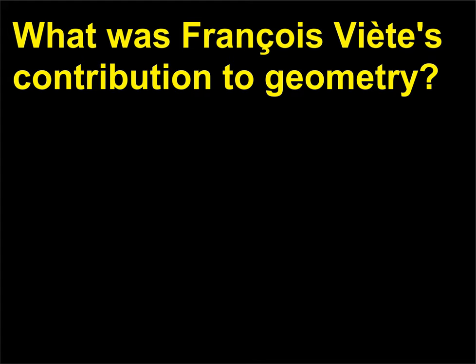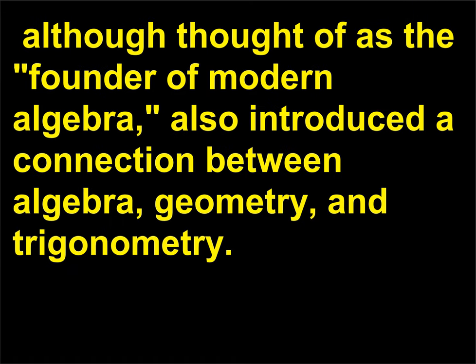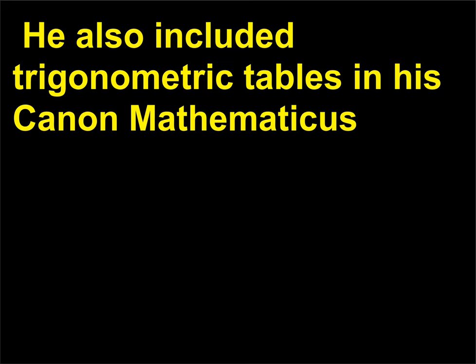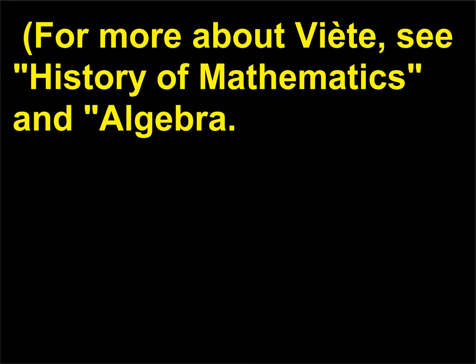What was François Viète's contribution to geometry? French mathematician François Viète, or Franciscus Vieta in Latin (1540–1603), although thought of as the founder of modern algebra, also introduced a connection between algebra, geometry, and trigonometry. He also included trigonometric tables in his Canon Mathematicus (1571), along with the theory behind their construction. For more about Viète, see History of Mathematics and Algebra.